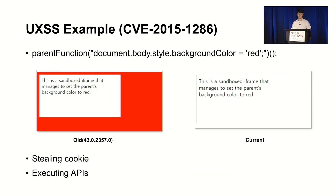Here is a UXSS example. If you create a function in an iframe that is executed in the main frame, called the parent function, using the UXSS vulnerability and execute the script, you can see the background become red. In this way, using the UXSS vulnerability, you can do various things such as leaking cookies or executing APIs in a different origin — in addition to simply changing the background color.